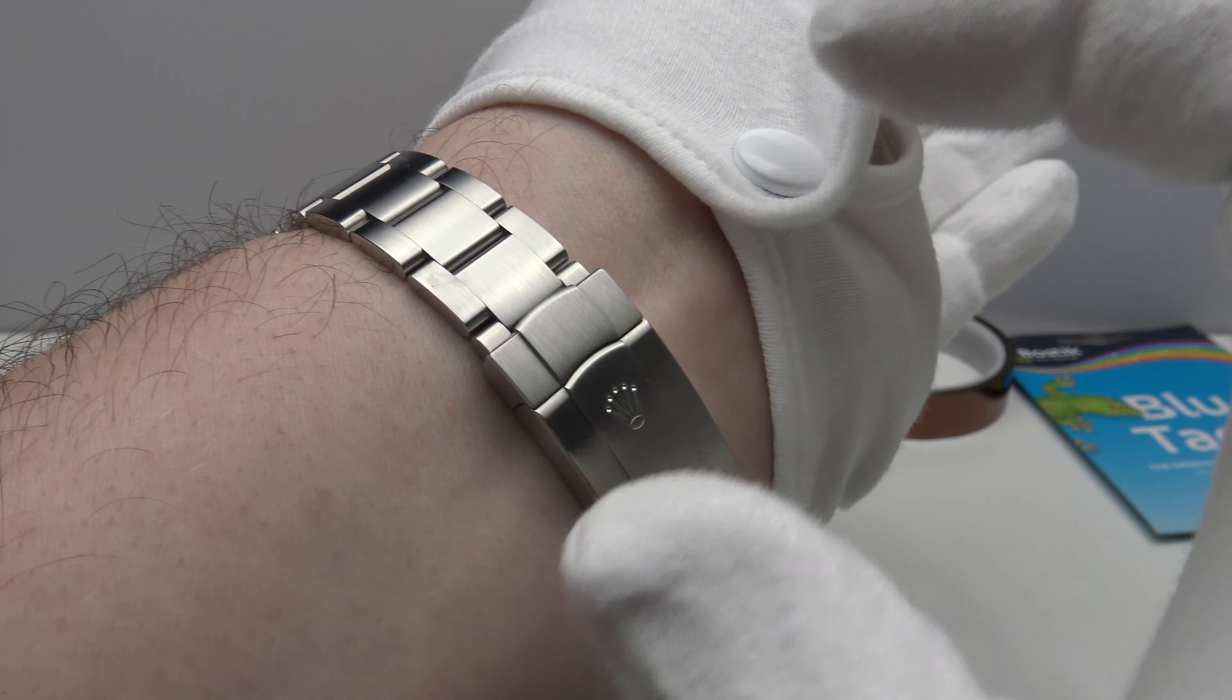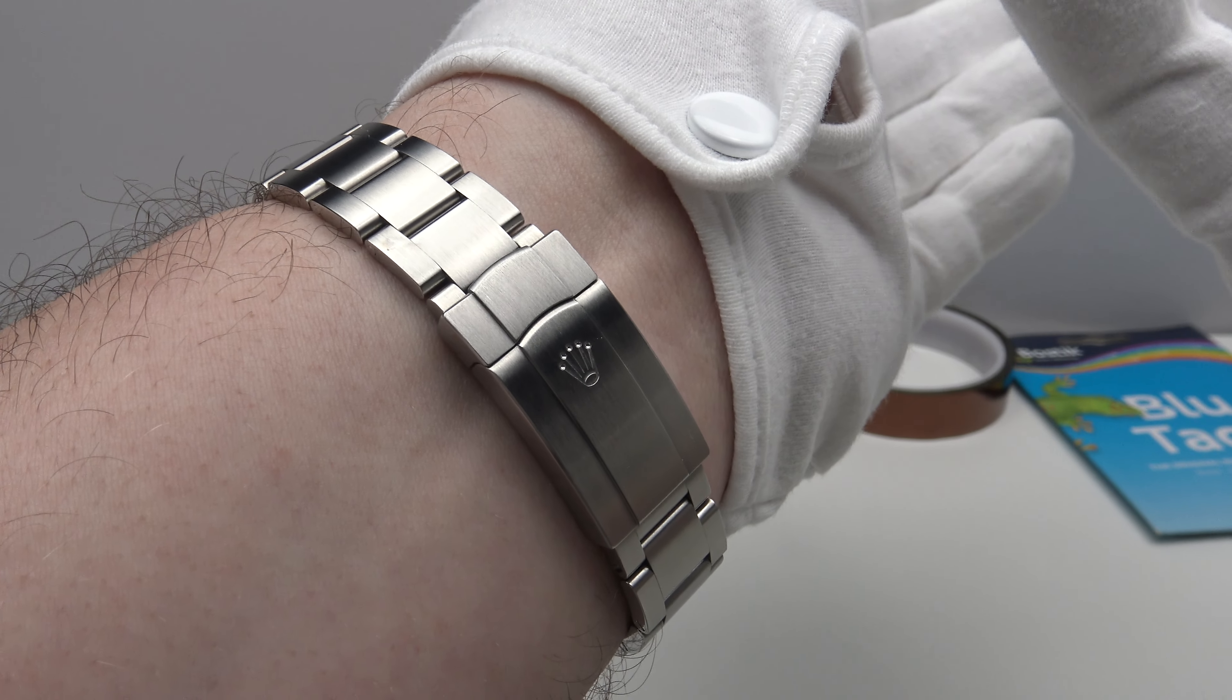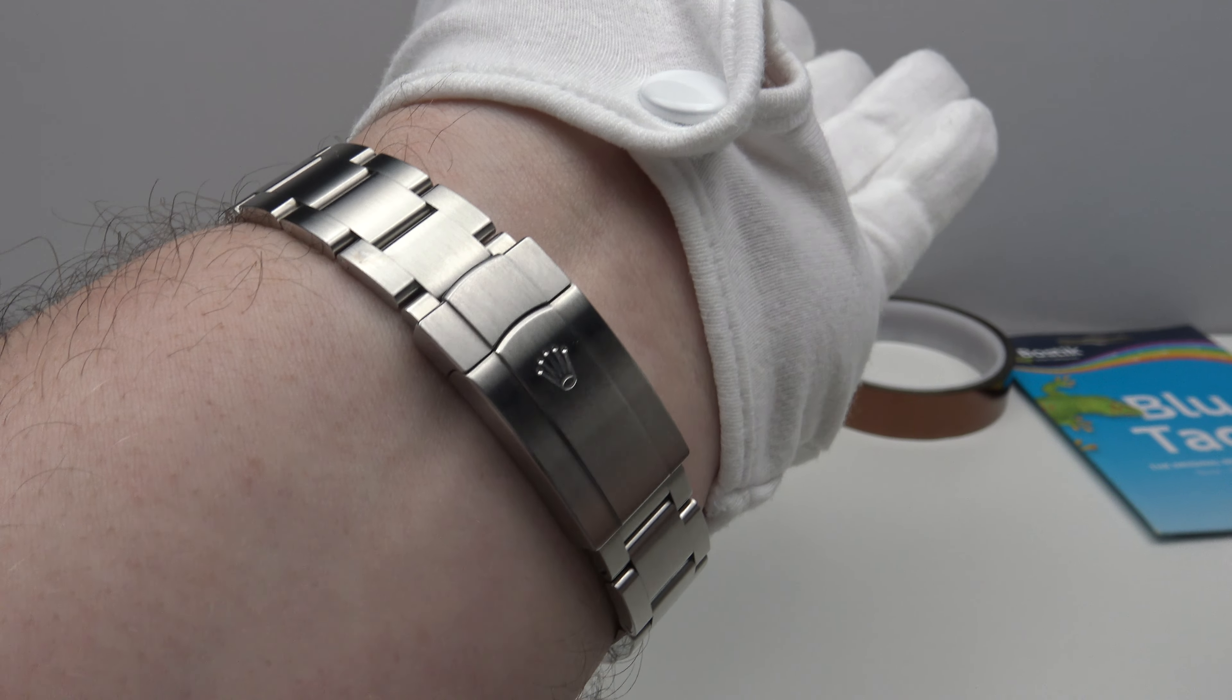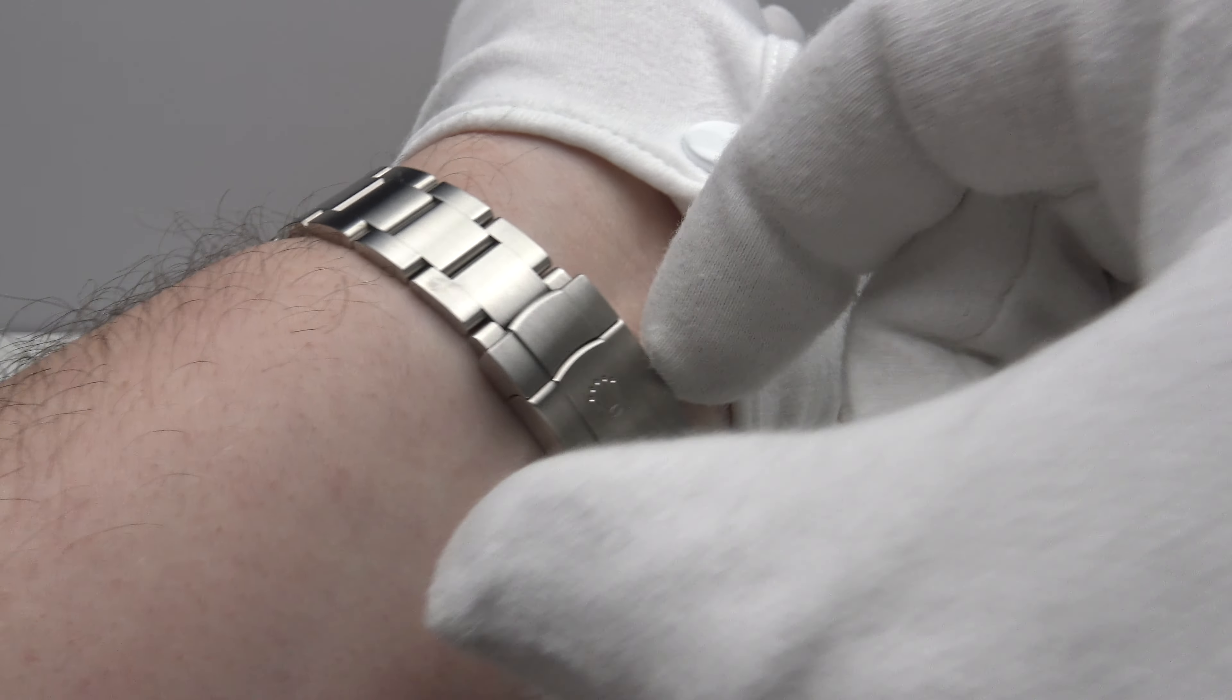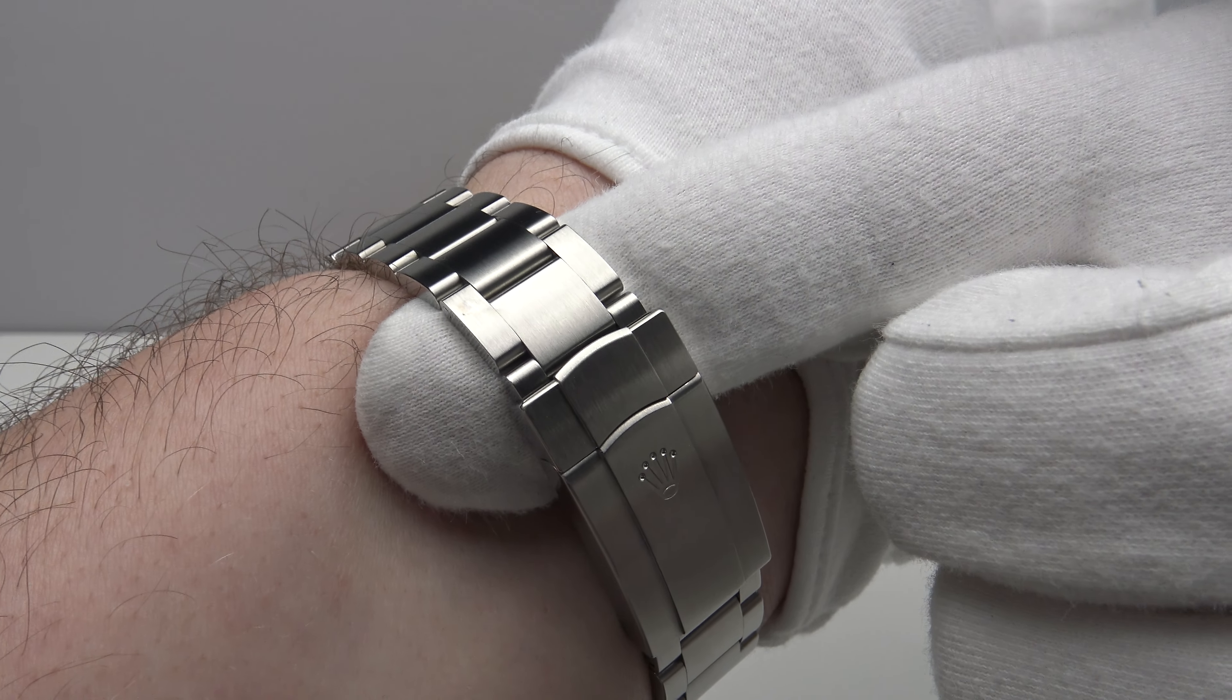The correct method of sizing a bracelet, regardless of whether it is an oyster bracelet or a jubilee bracelet, irrespectively, is to be able to slide an index finger underneath the bracelet at all times. That is the correct sizing method.